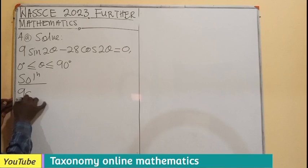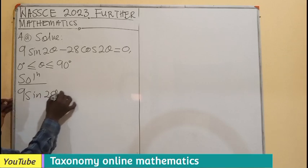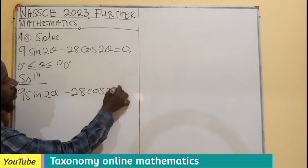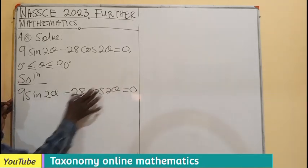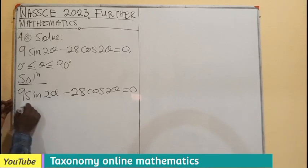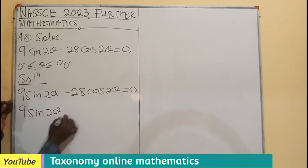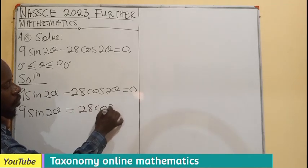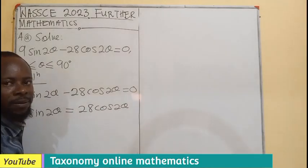So our 9 sin 2 theta will be... Okay, let me write the question. Now this will be going to become positive, so 9 sin 2 theta equals to 28 cos 2 theta.